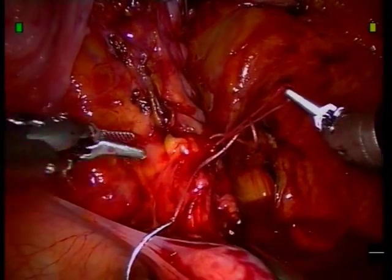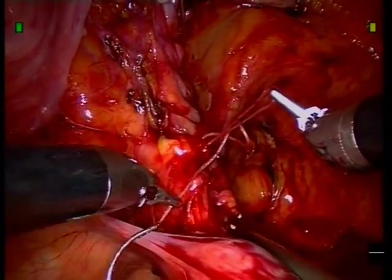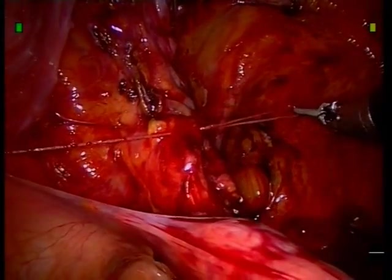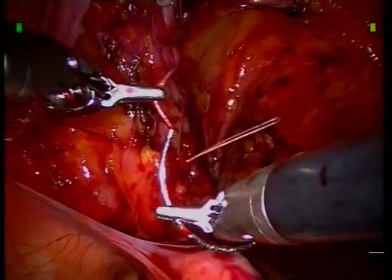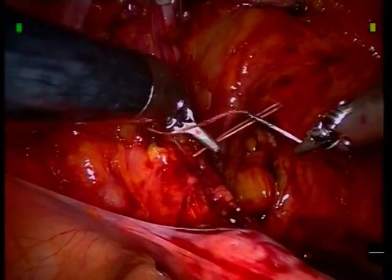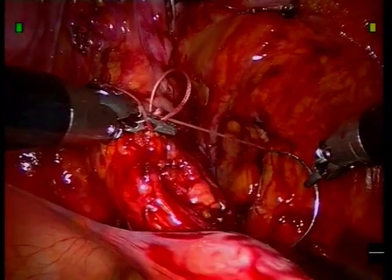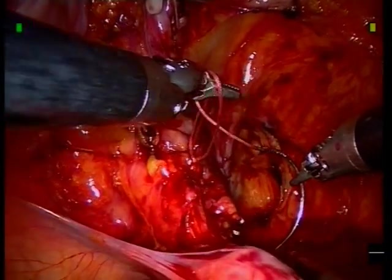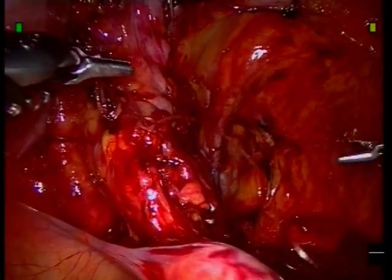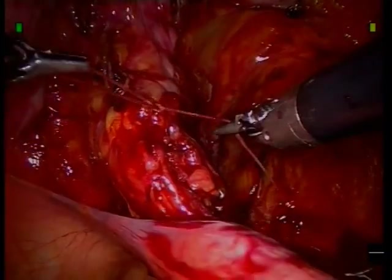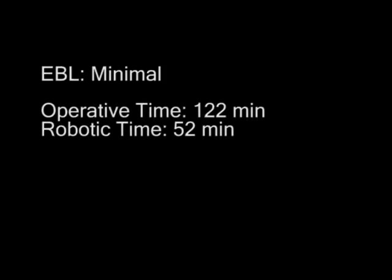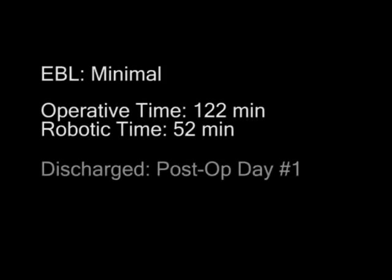Estimated blood loss was minimal. Total operative time was 122 minutes and total robot time was 52 minutes. The patient was discharged home the following day with an indwelling urethral catheter. Robotic-assisted laparoscopy provides an ideal approach for posterior bladder diverticulectomy.